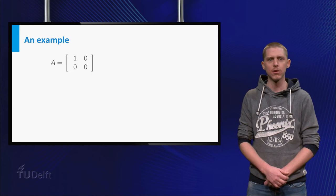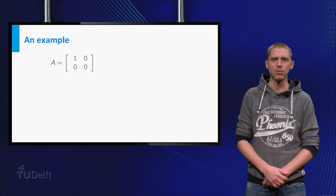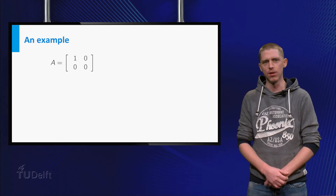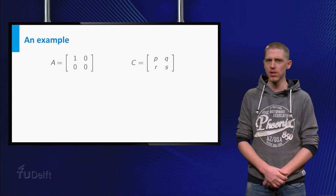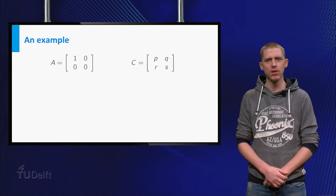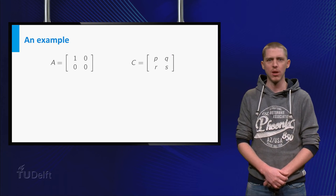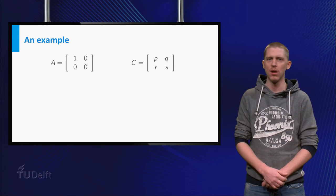Let us try to find an inverse of the matrix A equals 1, 0, 0, 0. If C exists, it should be 2 by 2, so it would be of the shape P, Q, R, S.